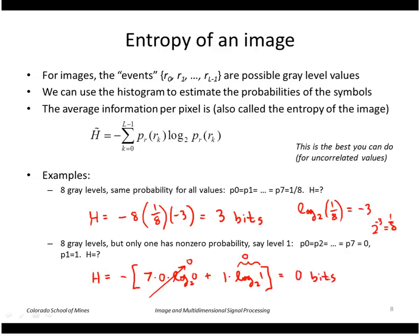And again, it's because we already know what the values of a pixel in the image are without even looking at them. So it carries no information.